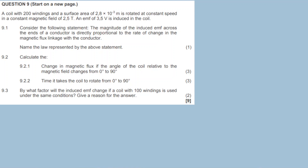Question nine: we have a coil with 200 windings and a surface area of 2.8 times 10 to the exponent minus 3 meters squared, rotated at constant speed in a constant magnetic field of 2.5 teslas, and an EMF of 3.5 volts is induced in the coil.